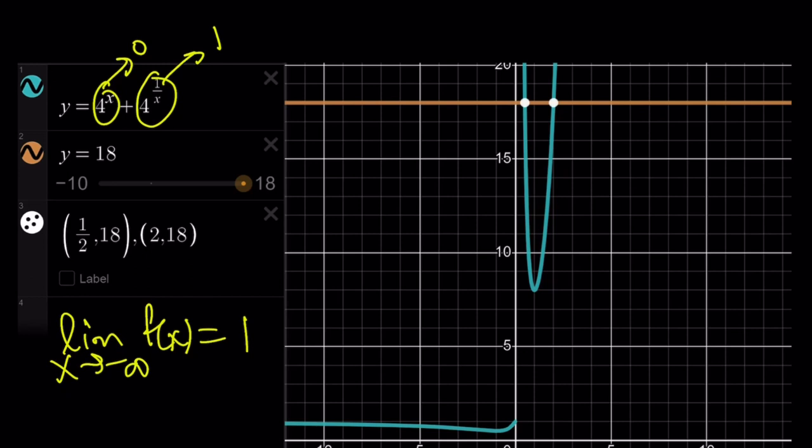So, it's never going to intersect y = 18. No way. But, the positive piece is going to intersect and it's going to be at two points. And, they're going to be 2 and 1/2. The reciprocals - is it always like that? Something to think about. And, of course, if one of the values is a solution, the other one is also a solution.